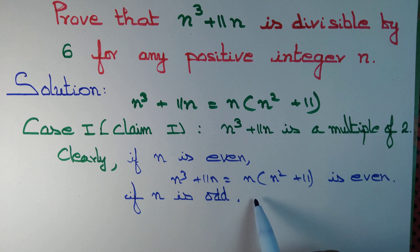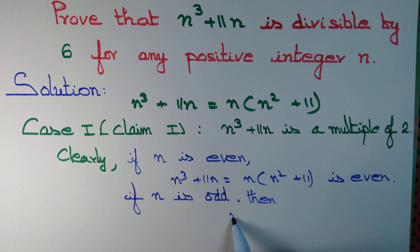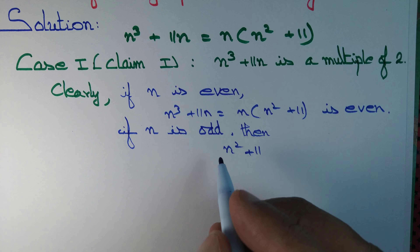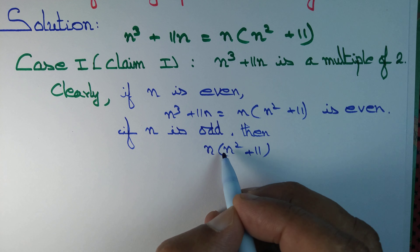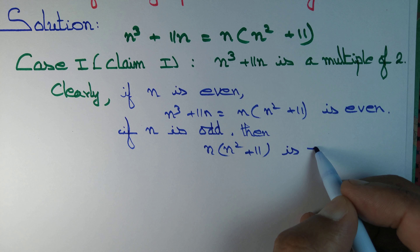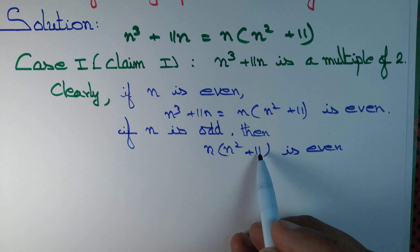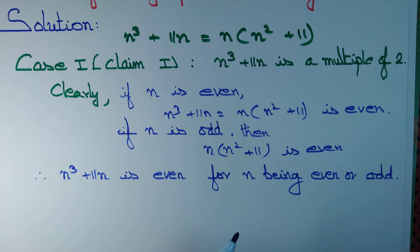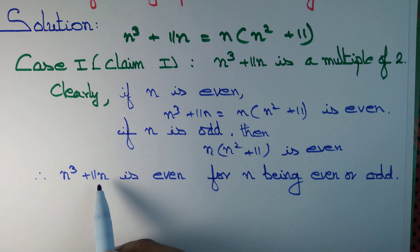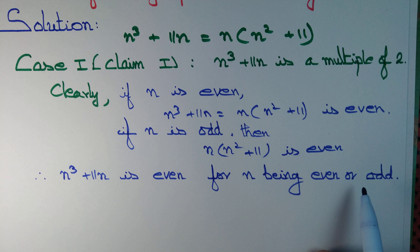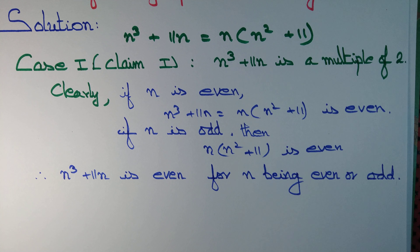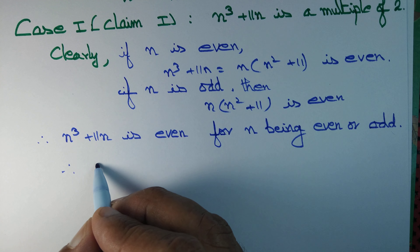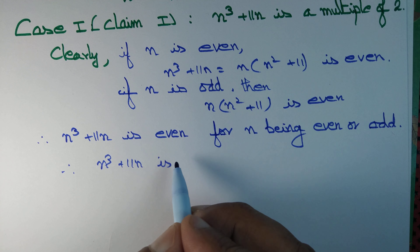If n is odd, then n² is also odd. And 11 is odd. The sum of two odd numbers is even, so n² + 11 is even. Therefore n(n² + 11) is even. So n(n² + 11) is even irrespective of n being odd or even. Therefore, n³ + 11n is a multiple of 2.